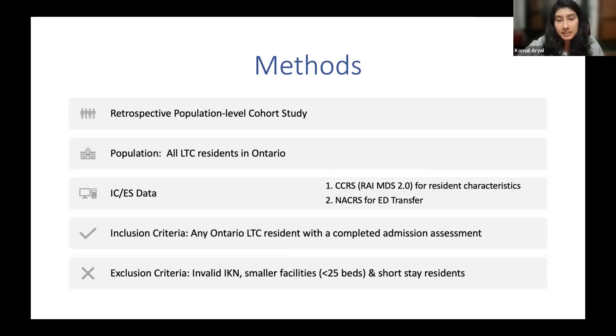For statistical analyses, we used cumulative incidence functions and Cox regressions to compare resident characteristics between residents that were transferred for a potentially preventable ED visit and a non-potentially preventable ED visit within the first 92 days of admission.